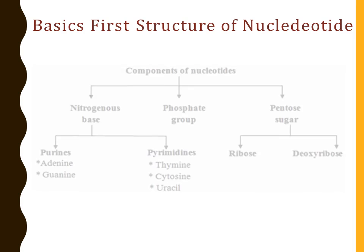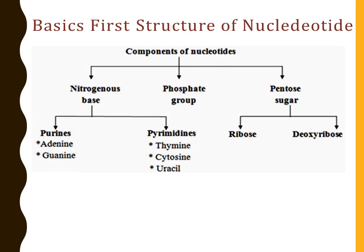A nucleotide consists of three components: nitrogenous base, phosphate group, and pentose sugar. As shown in the flowchart here, there are two types of pentose sugars — ribose and deoxyribose. Ribose sugar is present in RNA whereas deoxyribose sugar is present in DNA.